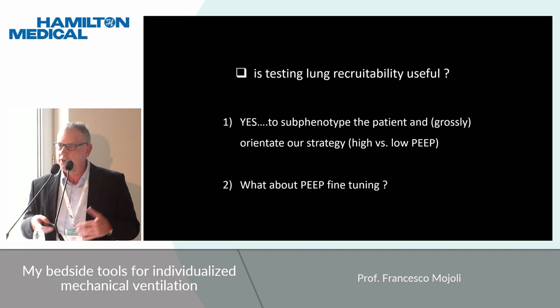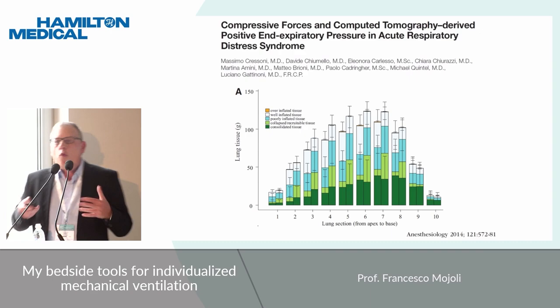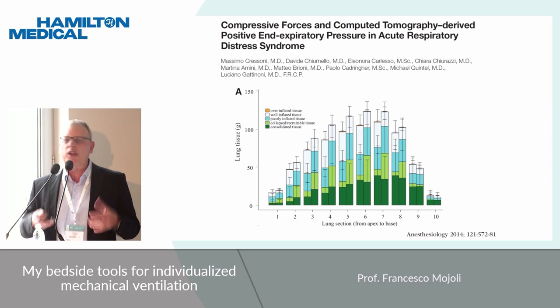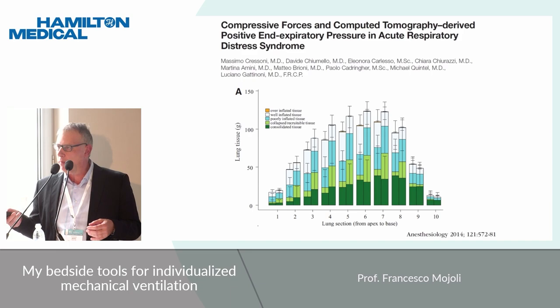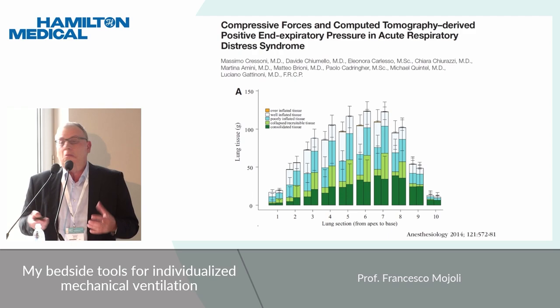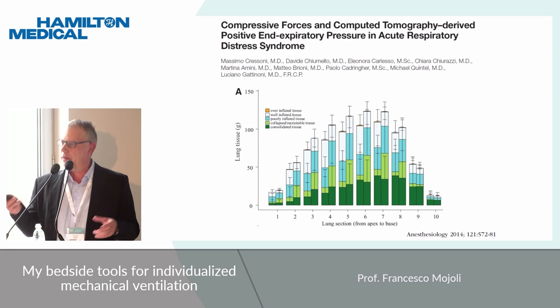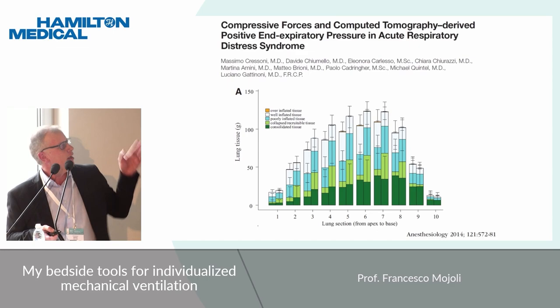But then I think we can move on trying to personalize as much as possible the setting of PIP, doing a fine tuning of PIP. One idea could be to consider that recruitability is not black or white — we have a continuous parameter, which is lung hysteresis. So we can imagine setting PIP according to this continuous parameter: the higher the recruitability, the higher the PIP. Could be a good idea. Unfortunately, it's not.